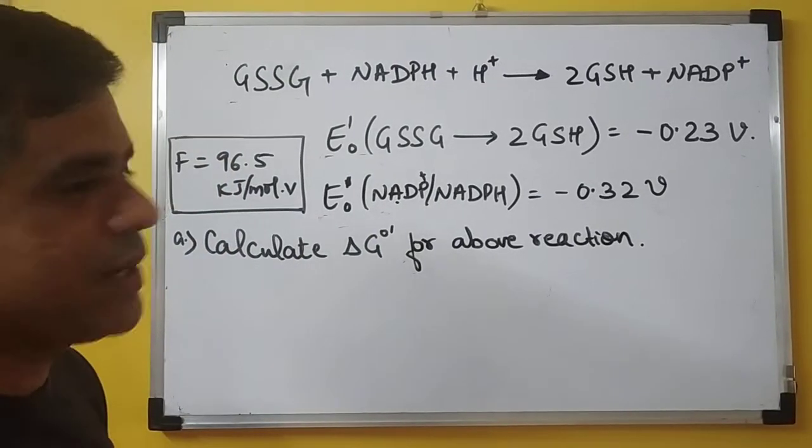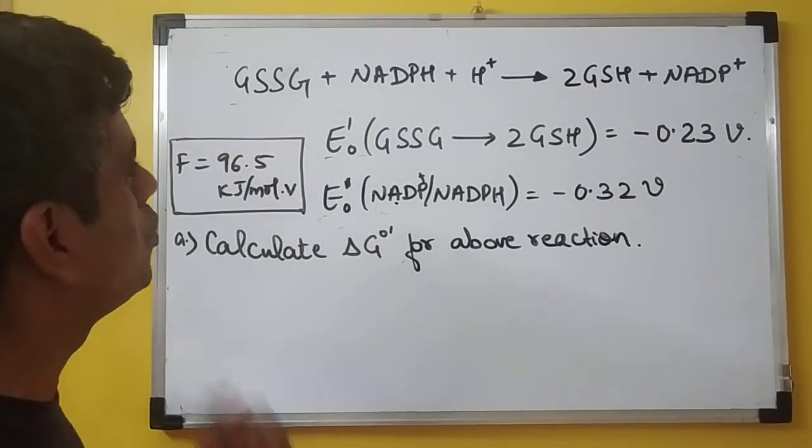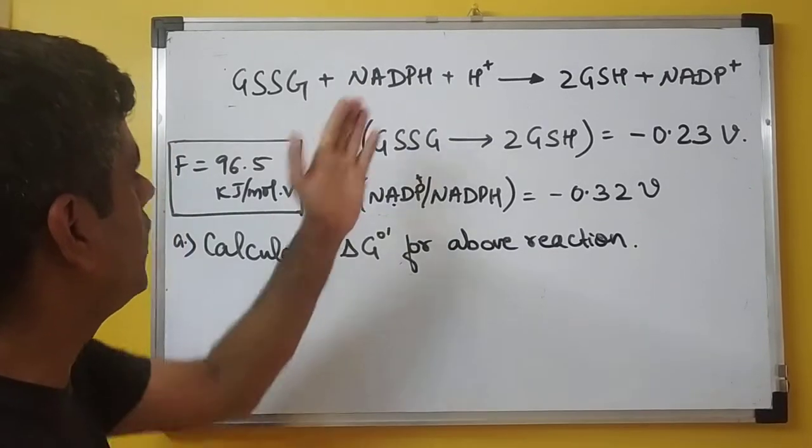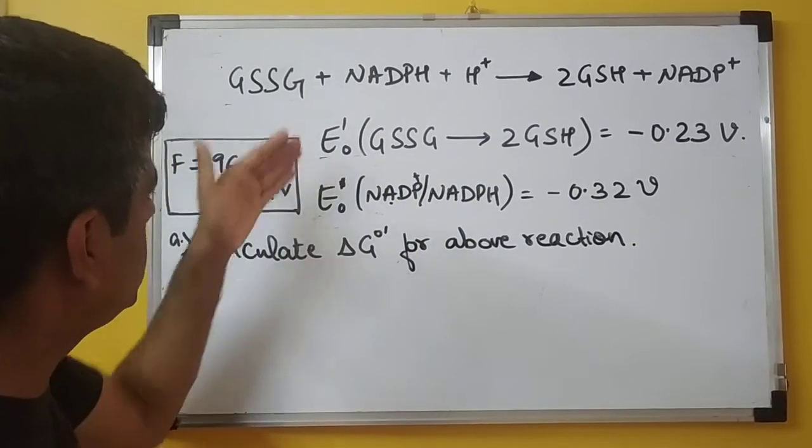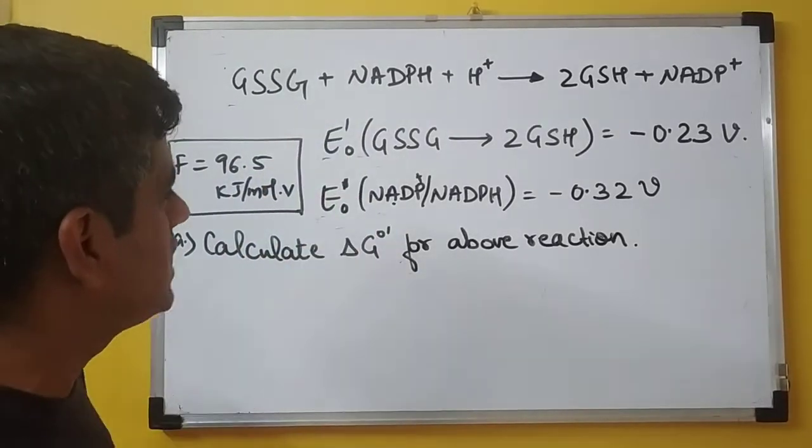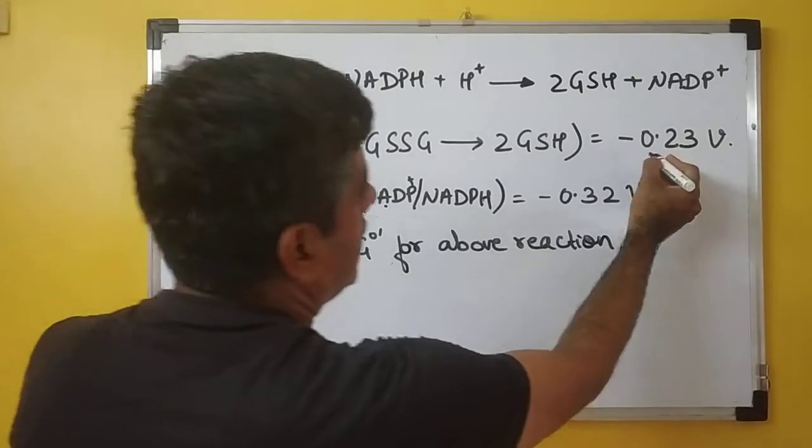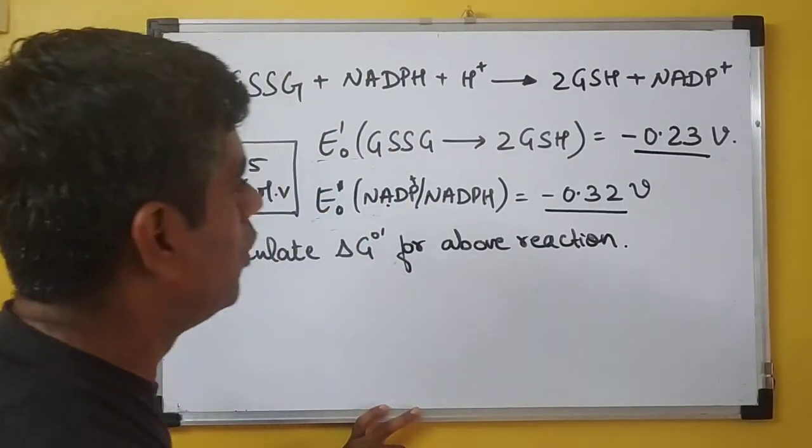We have a reaction catalyzed by glutathione reductase which is reducing glutathione using NADPH and H+ as the electron and reducing equivalent donor. We have the values of E₀' for both pairs, that is for glutathione as well as for NADP+ and NADPH. The values are respectively -0.23 and -0.32 volts.